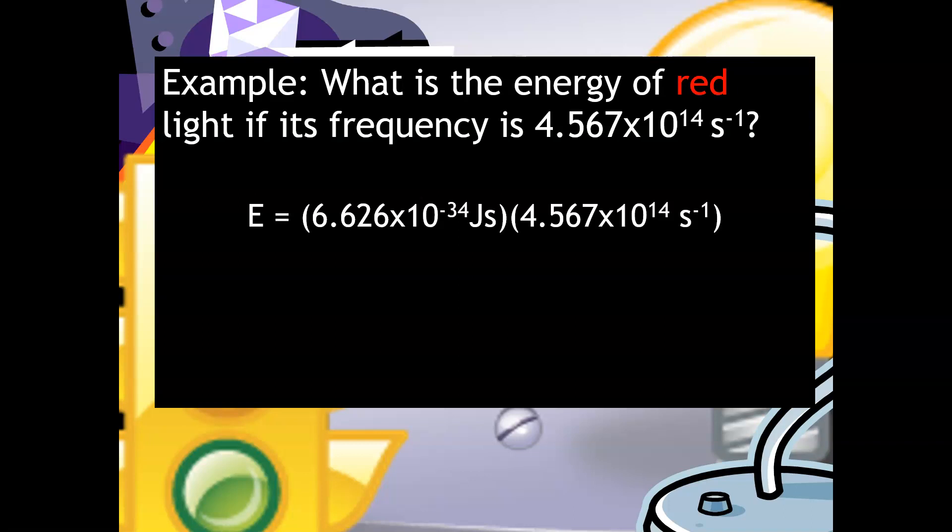You can see that the units are appropriate, right? So we've got reciprocal seconds and then we have seconds. So that's good. And so then all we have to do is multiply. And so you should end up with an energy of 3.026 times 10 to the negative 19 joules. Don't forget those sig figs. Both of these numbers technically have four sig figs. So that's why my coefficient there has four sig figs.